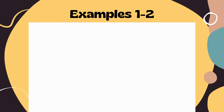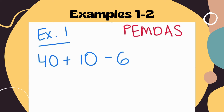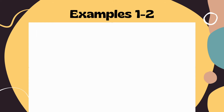Now that we know what the order of operations is, let's look at examples. For our first example, we have the numeric expression 40 plus 10 minus 6. We check PEMDAS: no parentheses, no exponents, no multiplication or division, but yes addition and subtraction. We do 40 plus 10 first to get 50, because addition came first, then 50 minus 6 gives our final answer of 44.